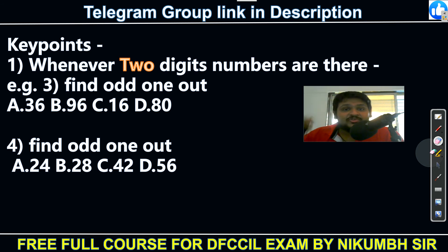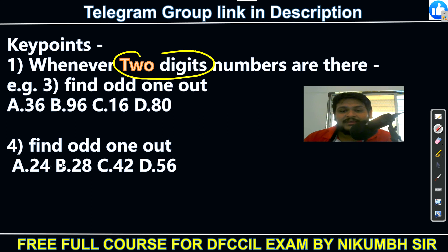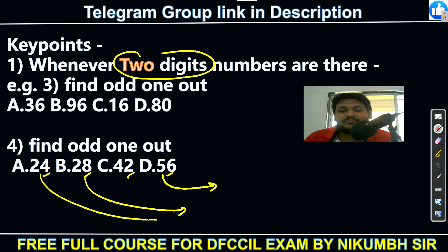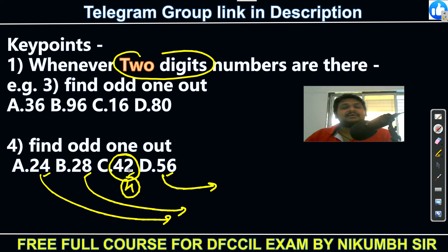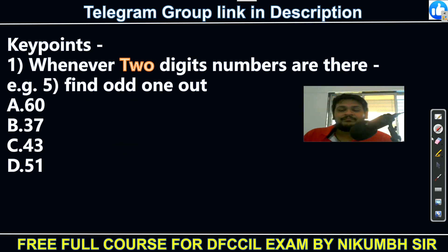Always use this sequence in the exam hall: Square → Prime → Factor. Fourth example: 56, 64, 48, 42. No squares, no primes, all even. Check factor 4 — 56 is divisible by 4, 64 by 4, 48 by 4, but 42 is not divisible by 4. So the answer is 42. Factor logic works again.